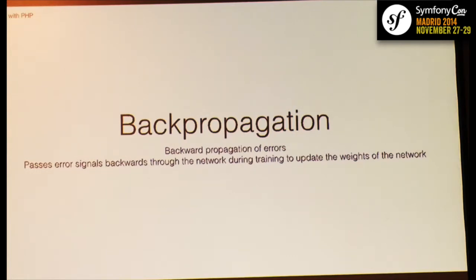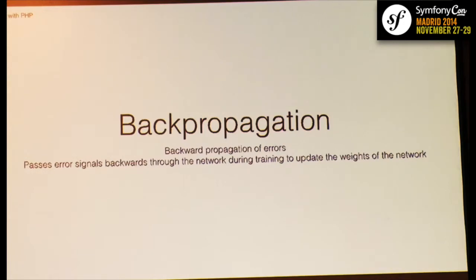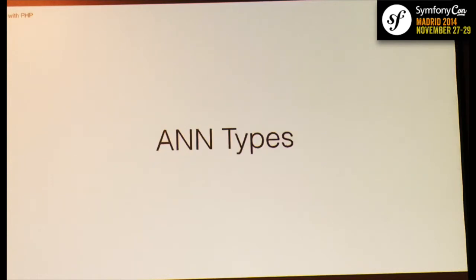Another very important concept is back propagation — short for backward propagation of errors — which means we propagate the error obtained from a test run back through the network to calibrate the weights and improve accuracy. This is used to train neural networks. Why not manage weights manually? We could, but neural networks usually have a lot of neurons, and you need to test quickly to see if your adjustments produce the desired results.